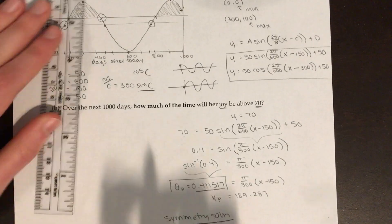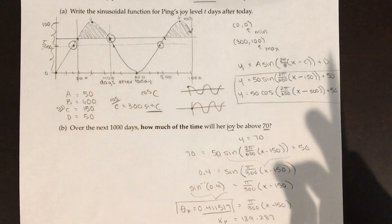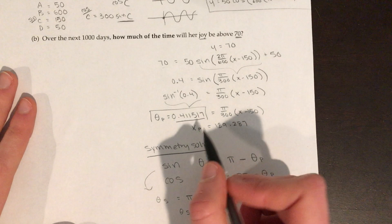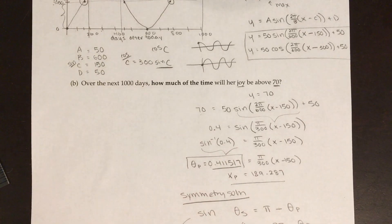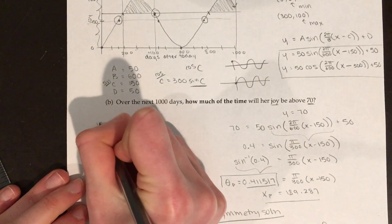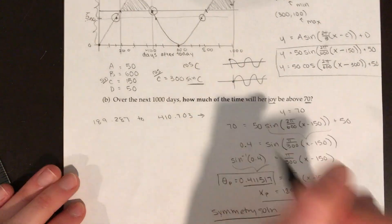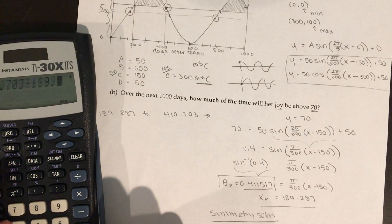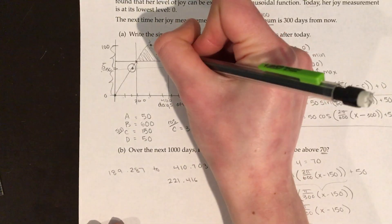Now I have both intersection points. The time when her joy is above 70 goes from t = 189.287 to t = 410.703. To find how much time that is: 410.703 − 189.287 = 221.416 days.